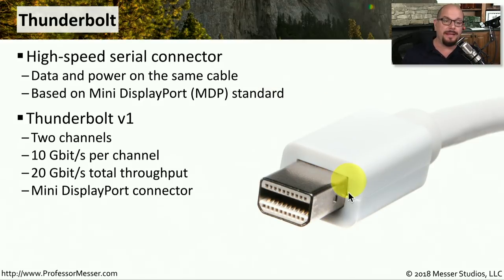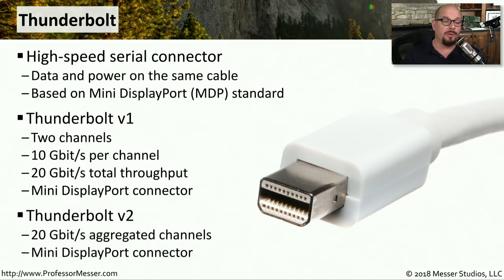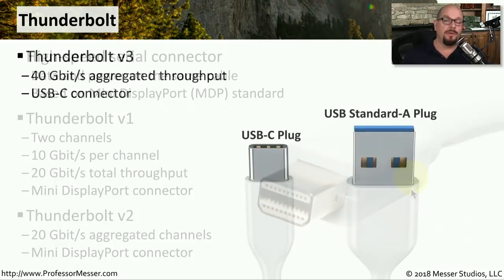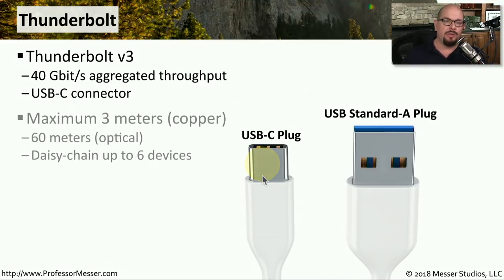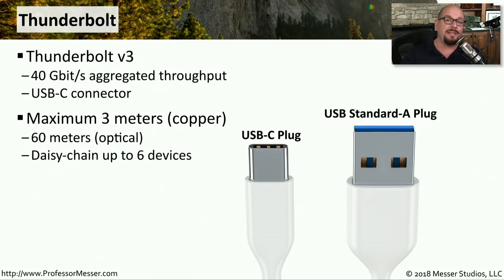Thunderbolt version 1 uses the mini DisplayPort connection. The throughput for Thunderbolt 2 is also 20 gigabits per second, but it's over an aggregation of channels rather than two separate 10 gigabit per second channels, and Thunderbolt version 2 also uses the standard mini DisplayPort connection. Thunderbolt version 3 increased the throughput up to 40 gigabits per second aggregated throughput, and it also changed the connector type to a USB-C connection. Thunderbolt versions 1, 2, and 3 have a maximum copper cable distance of about 3 meters. There's also an optical standard for Thunderbolt that allows you to extend this distance up to 60 meters. Thunderbolt also allows the daisy-chaining of devices, and you can daisy-chain up to six different devices using the single connection from your computer.